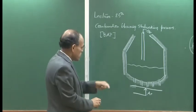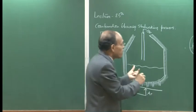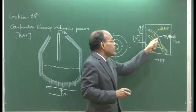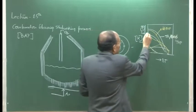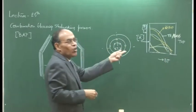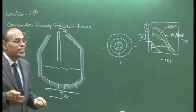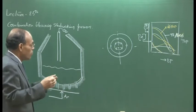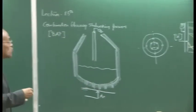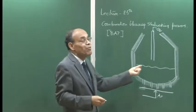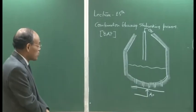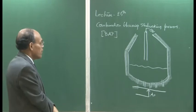Coming back to this process: in the bath agitation process also we will get elemental removal curves almost very similar — only the duration of the blow could be 2 to 3 minutes smaller with respect to the top blowing process, or the metallic yield may be 1 to 2 percent higher. The kinetic parameters and performance of the processes are very very important.